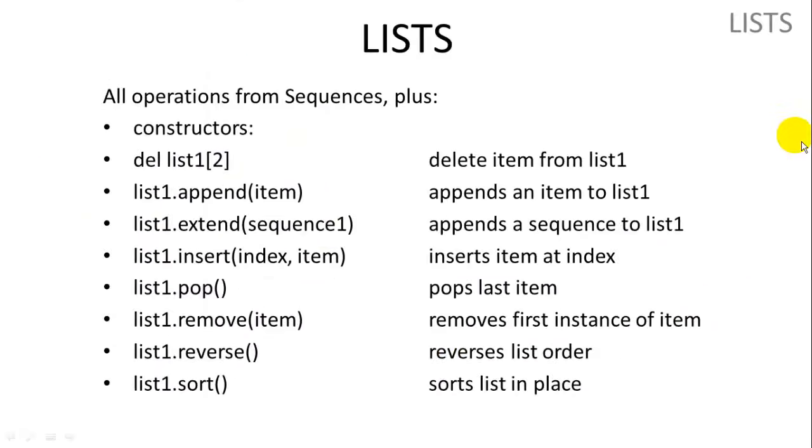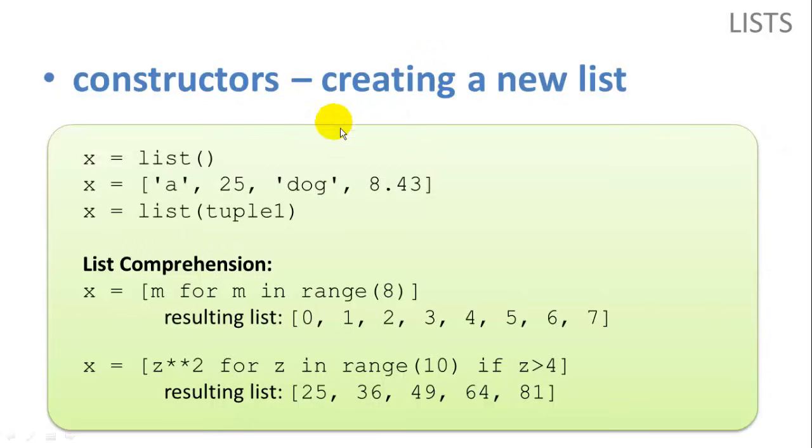So that covers general functions for sequence types. Now let's talk about specific list functions. So there are a few different ways to create lists. We can say x equals list, parentheses. We can say x equals in square brackets whatever list items we want to add to populate the list. And again, we can mix and match data types. So we have some strings, integers, floating points. And we can say x equals list, and then in parentheses a tuple. And we'll get a list from the items in the tuple.